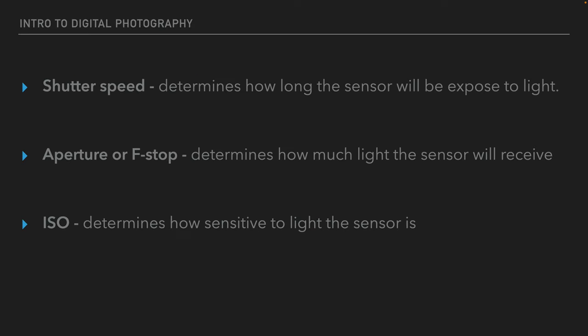The shutter speed is how long the sensor will be exposed to light. It's an element of time — a fraction of a second or a full second of time that we allow the shutter to be open to let the light hit the sensor. The aperture or f-stop determines how much light will hit the sensor; that is the size of the opening in the lens. The lower the number, the larger the opening, or the more light we let in. The higher the number, the smaller the opening, or the less light we let in.